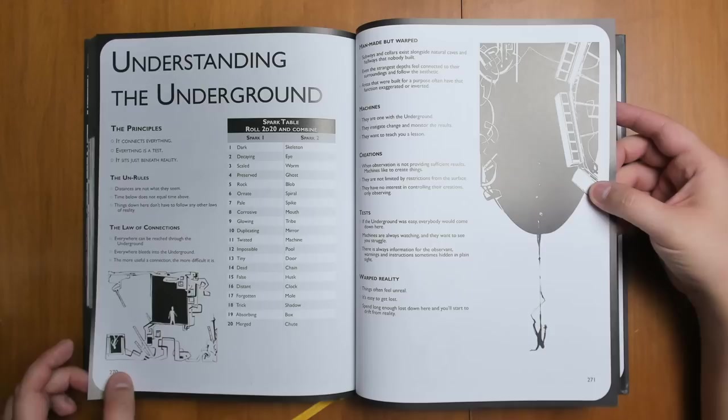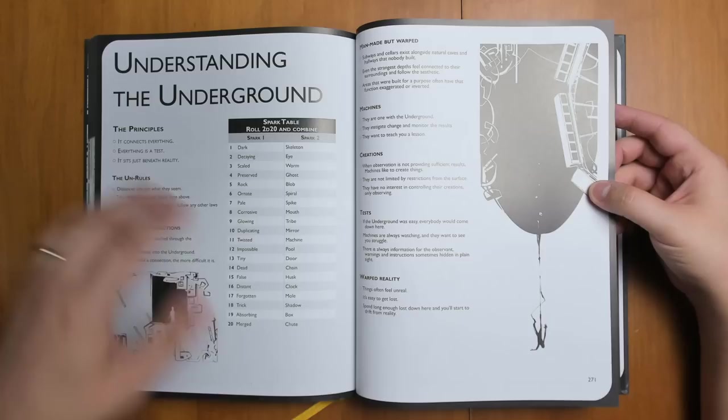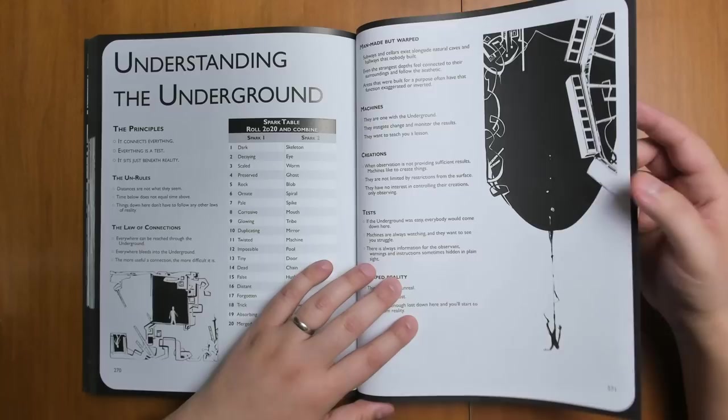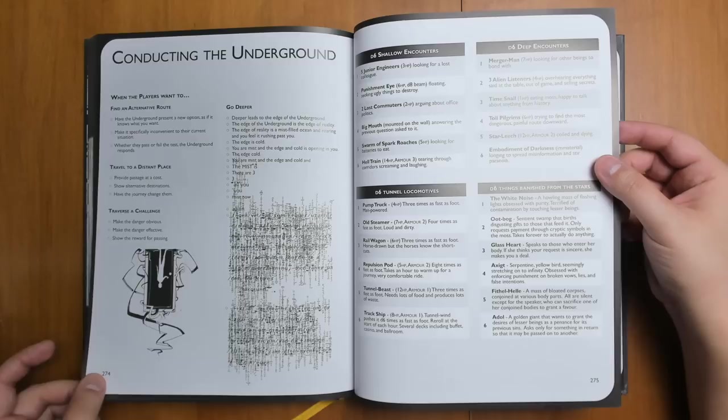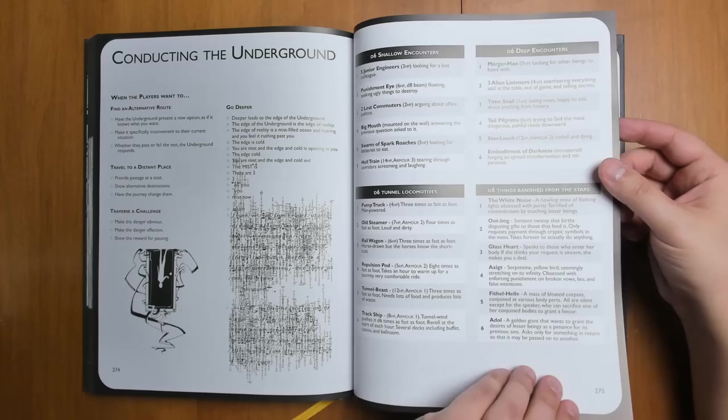We have the underground, where probably a lot of adventuring is going to take place. It connects everything. Everything is a test, and it sits just beneath reality. It's mostly run by these machine or AI type gods that are there to test you, which is a great excuse for why there's all of these tricks and traps and so on underground. It's there to test you and see how you hold up. Conducting the underground, I like how it dissolves into kind of chaos here. With some more encounters.